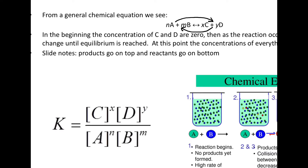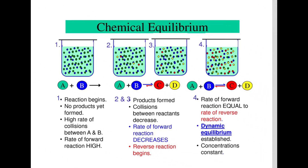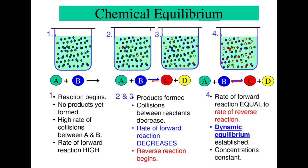Let's walk through how two reactants react and reach equilibrium. In the beginning, particle A and particle B are reactants — nothing is formed yet. We have a lot of collisions between A and B because they're the only things present. The rate of the forward reaction is going to be very high, indicated by the big black arrow. In the middle, products have formed from A and B. Collisions between the reactants decrease because there's less of them, and C and D start getting in the way.